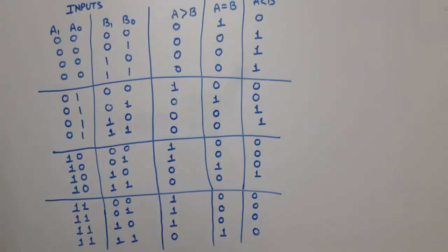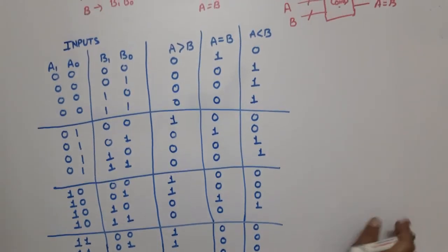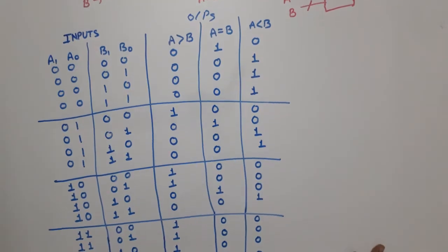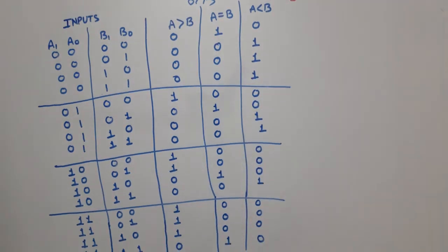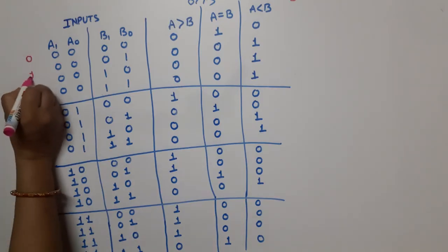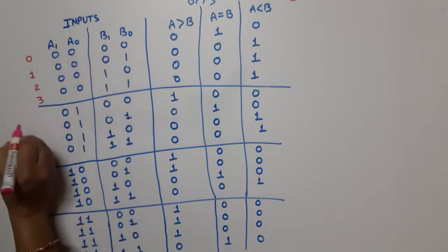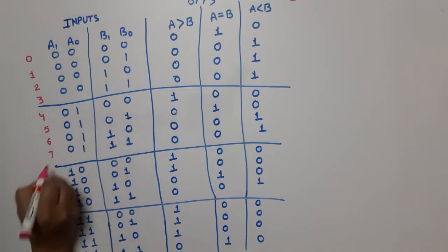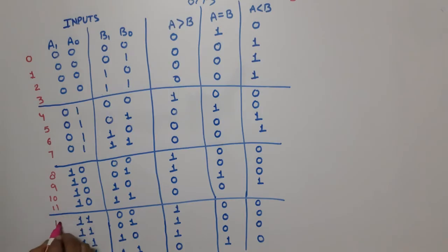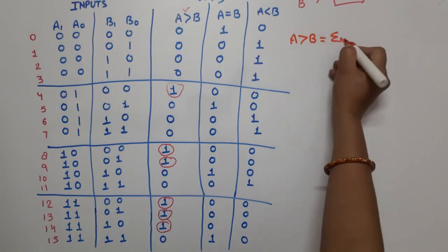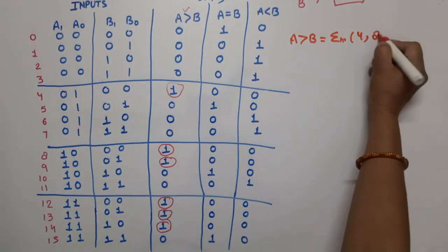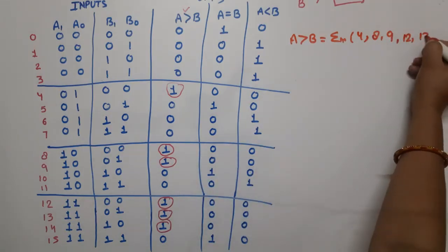This is the truth table for the comparator. Now let's find the Boolean expressions. Writing decimal equivalents for simplicity: A greater than B = Σm(4, 8, 9, 12, 13, 14). A equal to B = Σm(0, 5, 10, 15). A less than B = Σm(1, 2, 3, 6, 7, 11).